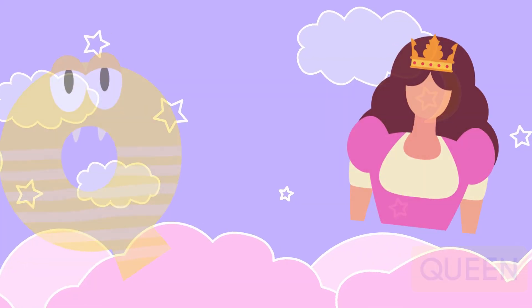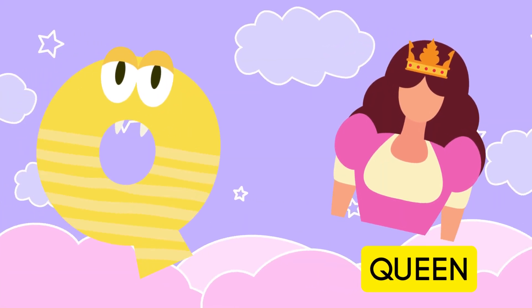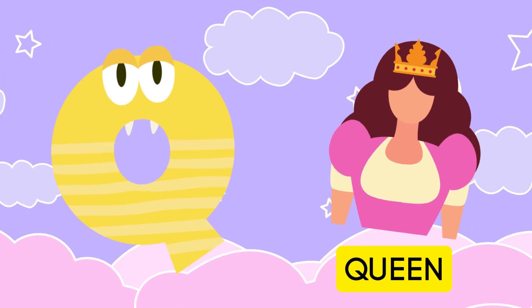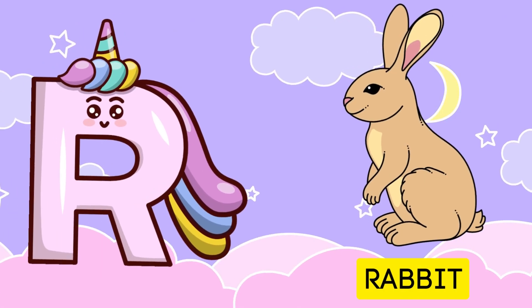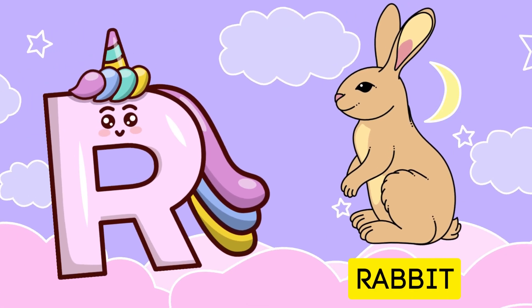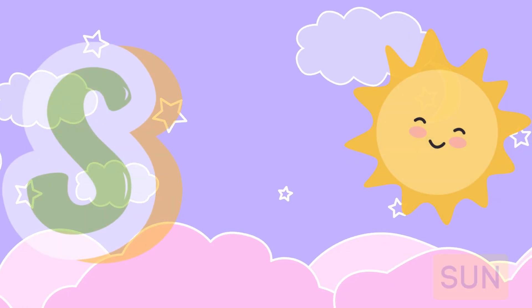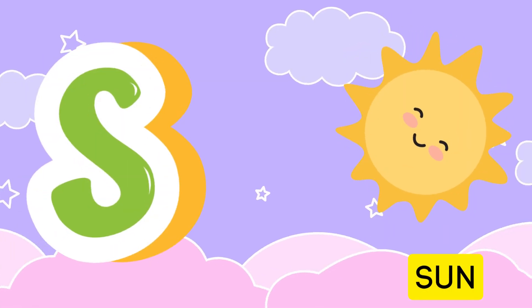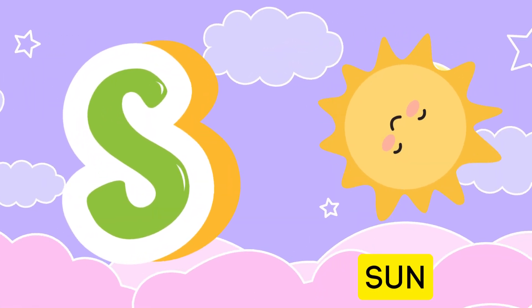Q is for queen, k-k-queen. R is for rabbit, r-r-rabbit. S is for sun, s-s-sun.